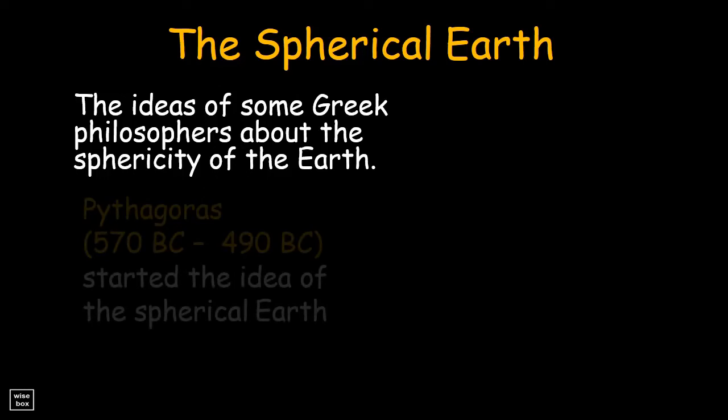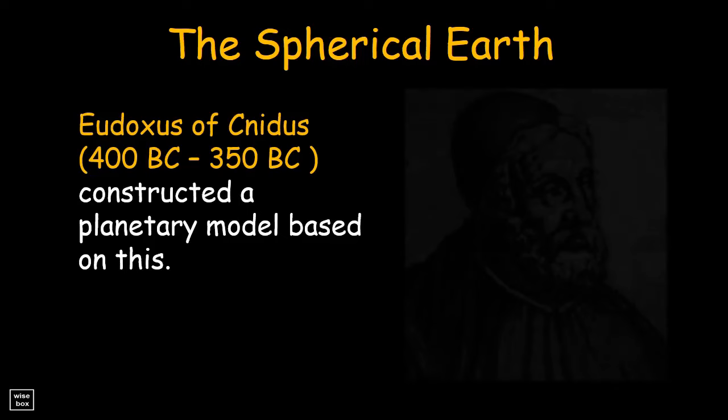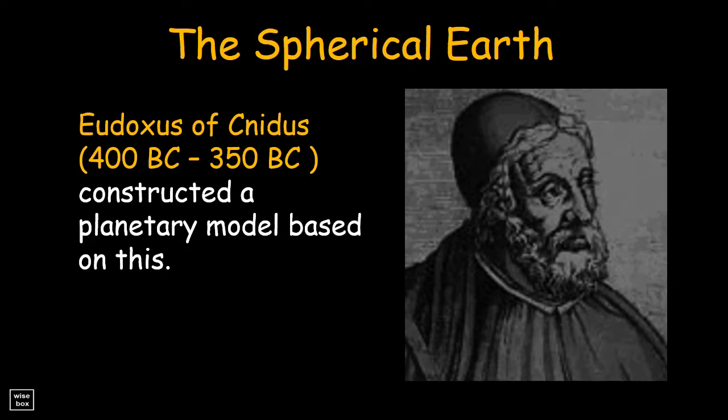Here are the ideas of some Greek philosophers about the sphericity of the Earth. Pythagoras started the idea of the spherical Earth. Eudoxus of Cnidus, another Greek philosopher, constructed a planetary model based on the thought that the Earth is spherical.